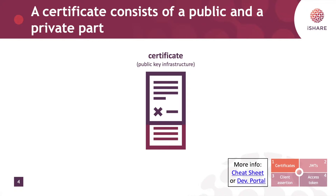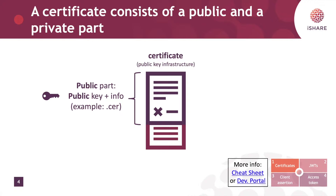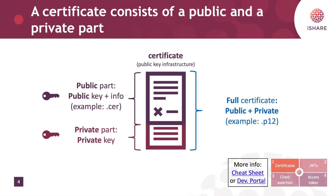A certificate consists of a public and a private part. The public part holds the owner information and the public key, and is usually signed by a certificate authority. For example, the .cer file is usually the public part of a certificate, and you can find examples of these on our developer portal. The private part of the certificate holds a private key which is associated to the public key. It's important that the private key of a certificate is always a secret only known to the owner of the certificate. If the private part of a certificate is leaked then the certificate is basically useless. A full certificate would have both the public and the private part and should only be owned by the owner. An example of these is a p12 file, and such a file is usually password protected.